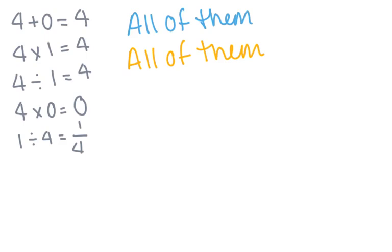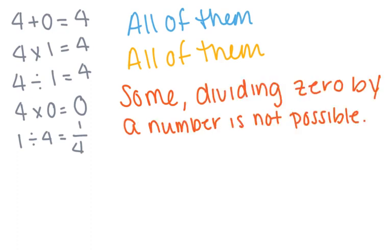What if we replaced the number 4 with the number 0? Would each of the number sentences be true? With using the number 0 instead of 4, some of the expressions are going to be true. Dividing 0 by a number is not possible. So this last expression — 1 divided by 4 equals 1 fourth — if we replace 4 with 0, we would have 1 divided by 0 equals 1 over 0, and this is not possible. You cannot replace this last expression with the number 0.